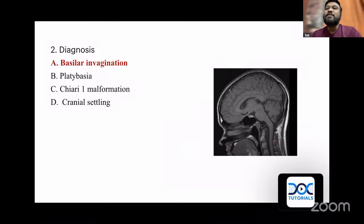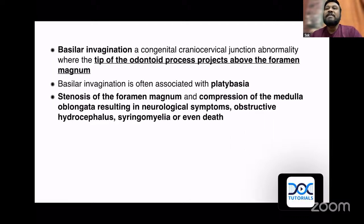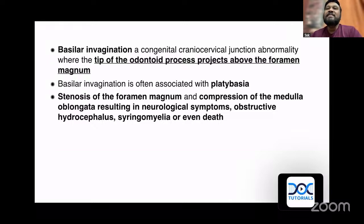What is basilar invagination? We will discuss all these terms now. Basilar invagination is nothing but the tip of the odontoid process projecting above the foramen magnum, compressing the craniovertebral junction — that is, the brainstem and upper cervical cord. It is frequently associated with platybasia. What is platybasia? Platybasia is nothing but the flattening of the skull base. Let me draw the skull base.